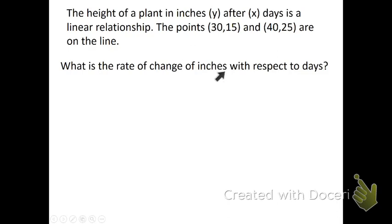Okay, we got another problem. This time they don't give us a graph. It looks like this time they're giving us ordered pairs. We know that x is written first and y is written second for each of these. Let me go ahead and read the problem. It says the height of a plant in inches y, after x days is a linear relationship. These are the points that are on the line. What's the rate of change of inches with respect to days? Now they kind of gave us up here what each of the variables represent. But if they didn't, we would know by how this is read. The rate of change of y with respect to x would tell us that y is inches and x is days.